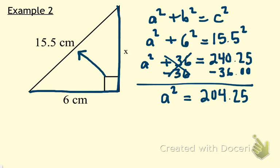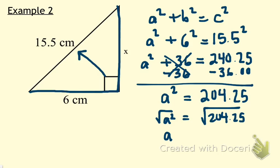Don't forget that last step: we are going to square root both sides so we can figure out what A is equal to. The square root of A squared is equal to A, and the square root of 204.25, rounded to the hundredths place, is equal to 14.29. My label here is centimeters, so the length of the missing leg is 14.29 centimeters.